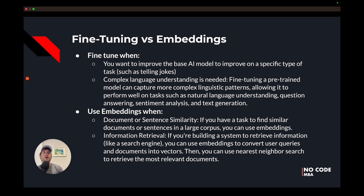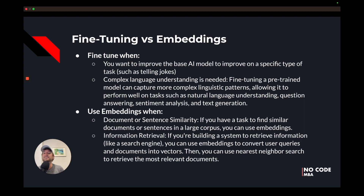Embeddings, on the other hand, are for when you want to use AI to answer specific questions based on proprietary information and you want it to answer with accurate information — like a chatbot where you have a PDF that you want the AI to answer based on. Fine-tuning is better for improving things like natural language understanding, question answering, sentiment analysis, and text generation. Check out the fine-tuning course if you want to learn more, and feel free to ask any additional questions about fine-tuning or embeddings.